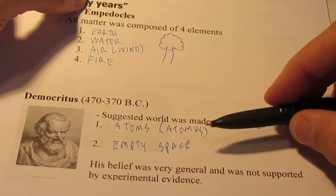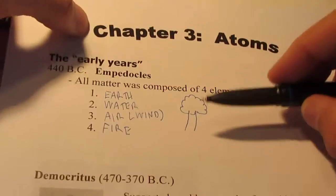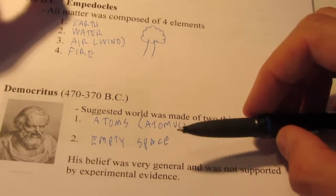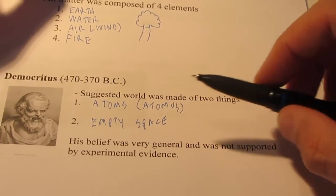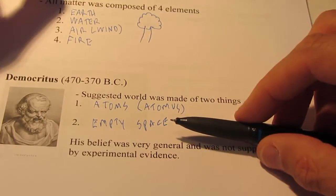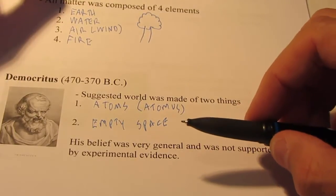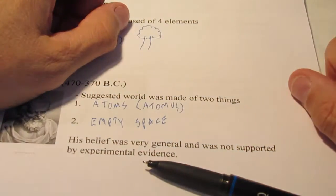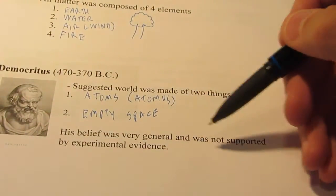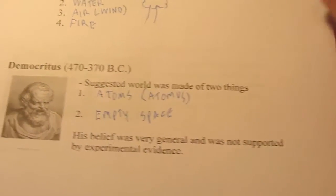Now, we had no experimental evidence to prove this. This was much more easily understood, the Empedocles theory. To further Democritus' explanation, he believed that atoms of solids had sharp corners on them and would interlock with each other, whereas atoms of liquids were smoother and they could slide past one another. So his belief was very general and was not supported by experimental evidence.